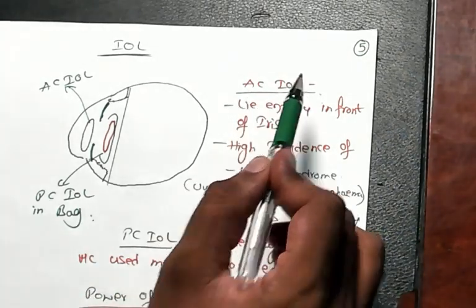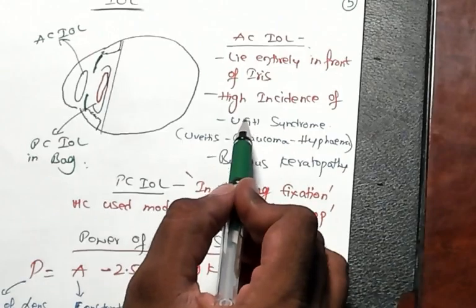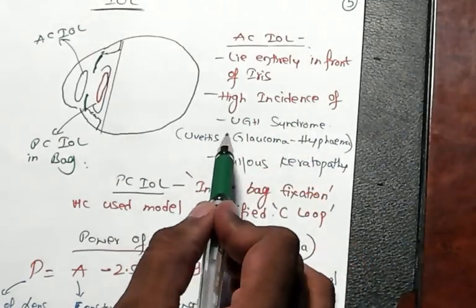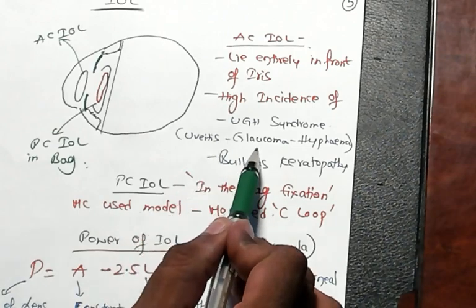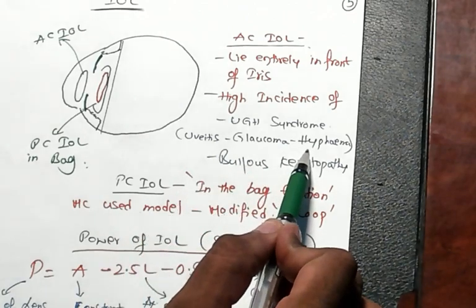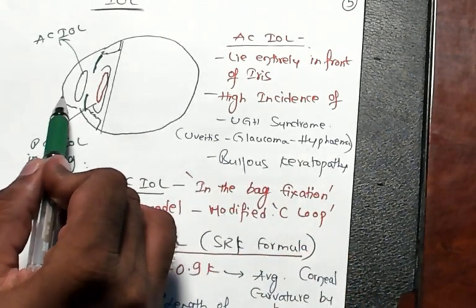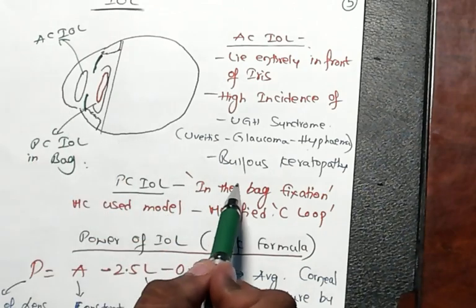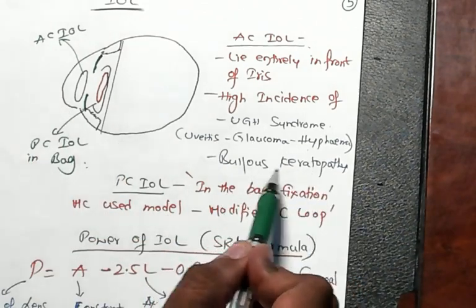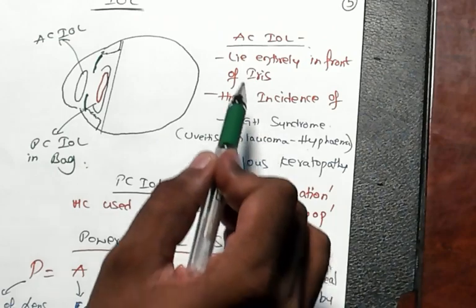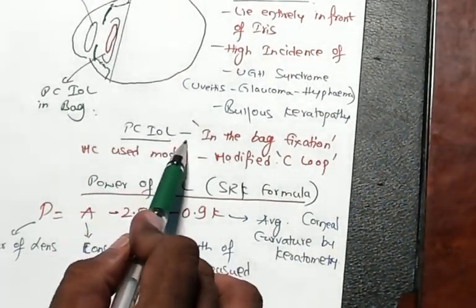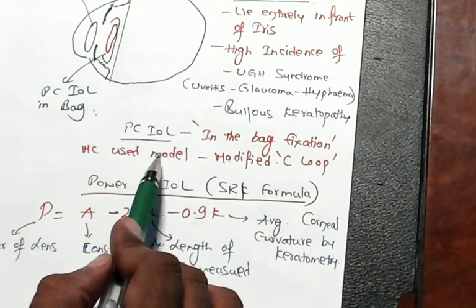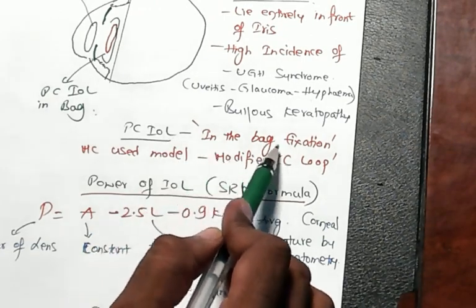Anterior chamber IOL main challenge is there is a very high incidence of UGH syndrome, that is uveitis glaucoma hyphema syndrome. Similarly it is very close to cornea, bullous keratopathy is also more common in the anterior chamber IOL.